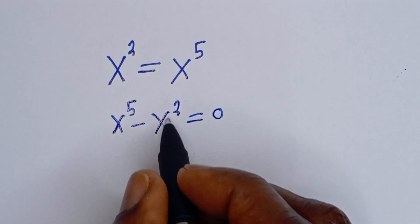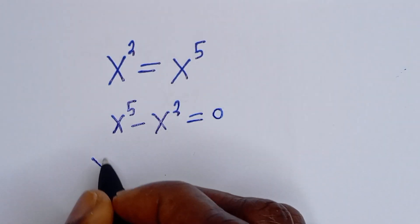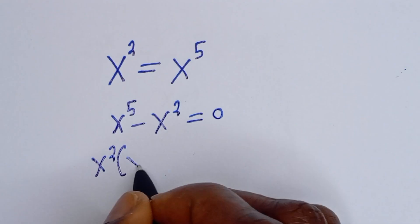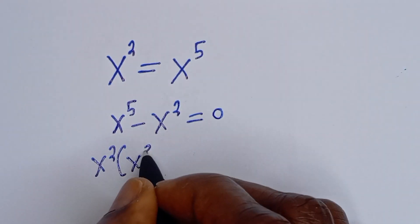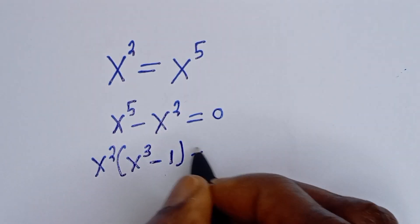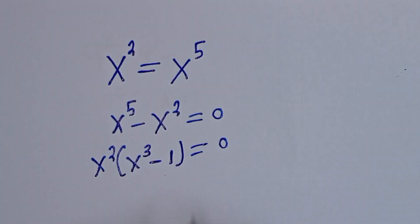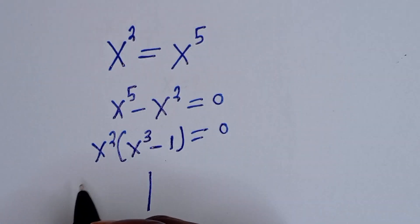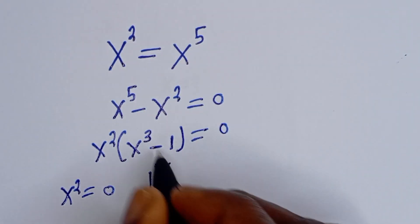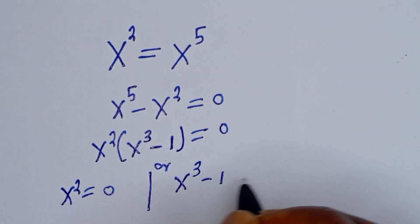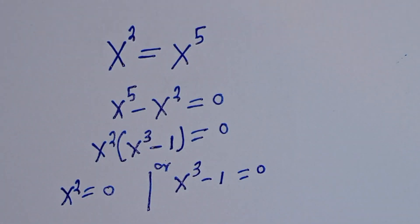From here, we factor out S squared. We have S squared bracket S to the power of 3 minus 1 is equal to 0. There are two cases here. The first case is S squared is equal to 0, or the second case, S to the power of 3 minus 1 is equal to 0.